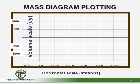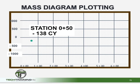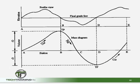Referring back to our earthwork volume calculation sheet, we needed 138 cubic yards of material at station 0+50. We want to go ahead and plot that on our mass diagram. In the end we should have a running total that looks similar to this — the mass diagram, a running total of the quantities of material that is surplus or deficient along the project profile.